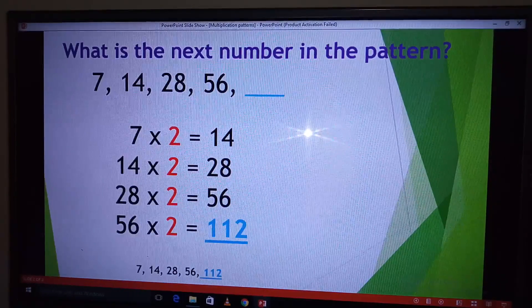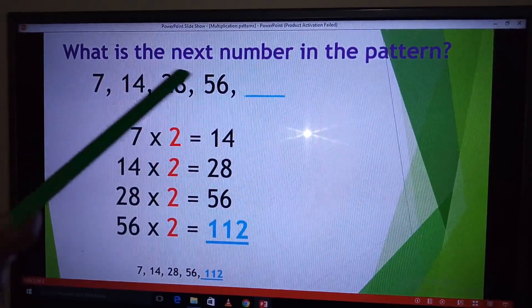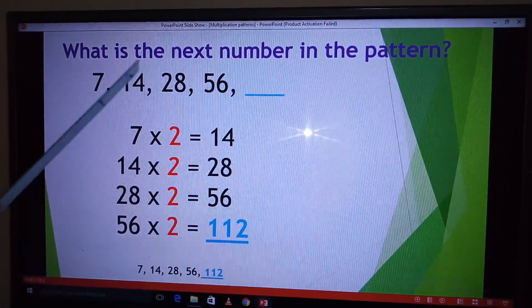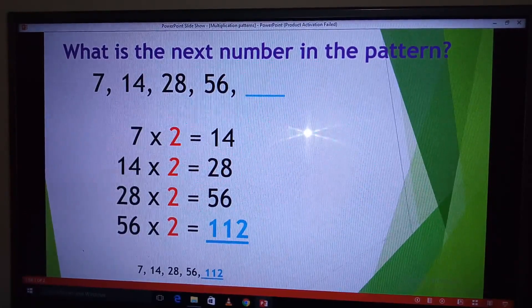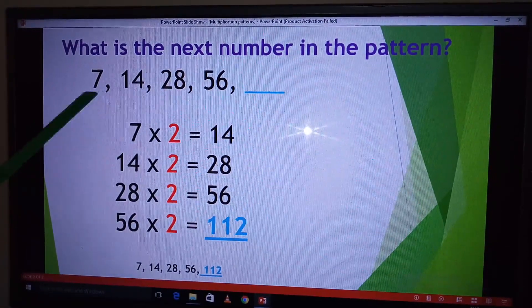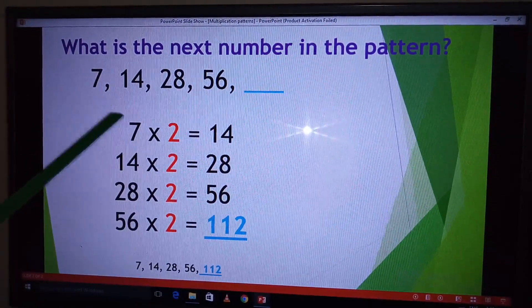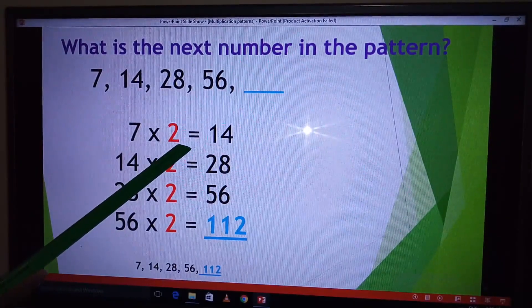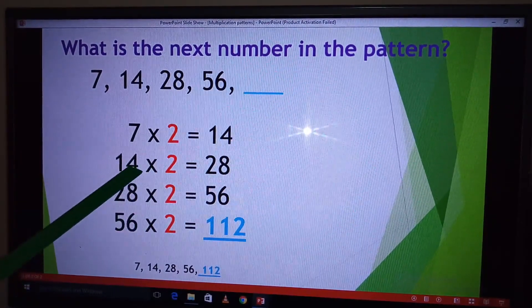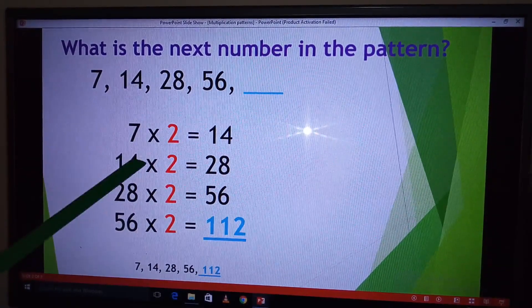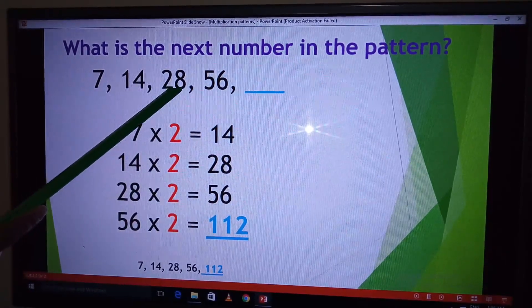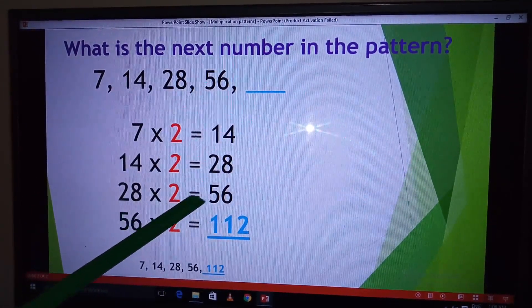I have another example here with me. What is the next number in the pattern, 7, 14, 28, 56? So for us to get the next number here, 7 was multiplied by 2 to get 14. To get 28, 14 was multiplied times 2. To get 56, 28 was multiplied by 2.